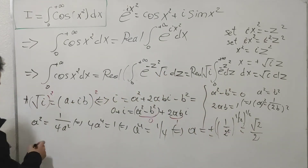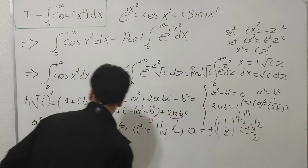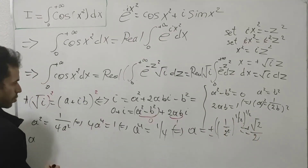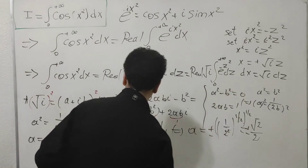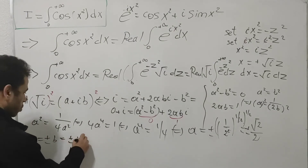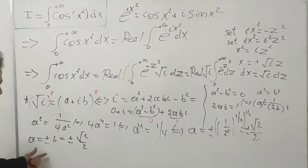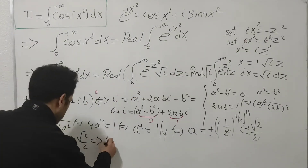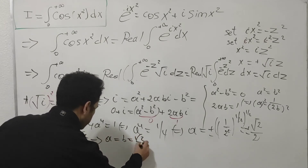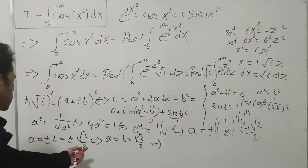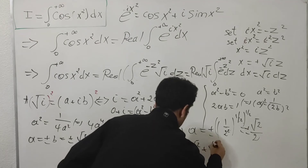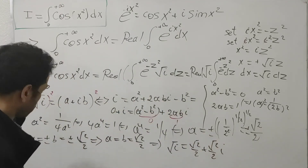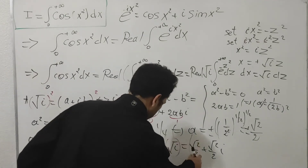Similarly b = ±√2/2. Since the integral is positive, a and b must both be positive, so a = b = √2/2. Therefore √i = √2/2 + (√2/2)i, and the real part of √i is √2/2.